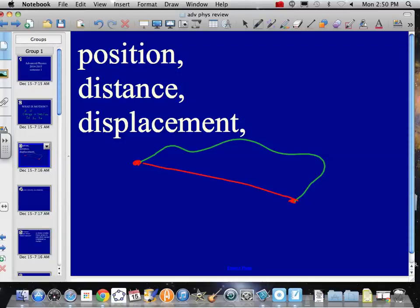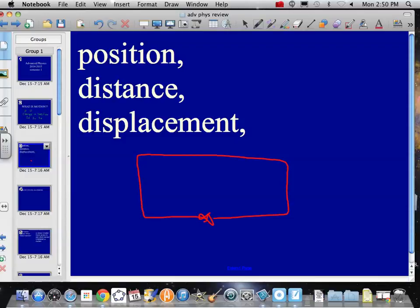Displacement is actually the change in location - that would be the red line. How far apart are you from the beginning? The green line would be your distance. Maybe a better example is if you go around the block. You live here, go around the block, and come home. Your displacement is zero - origin and end are the same place. Your distance is one block.